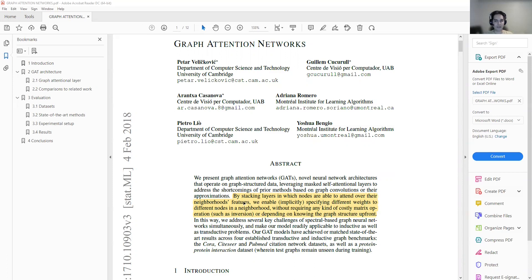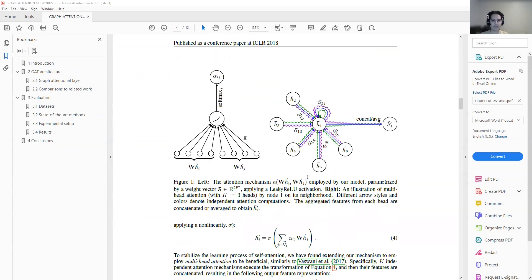By stacking layers in which nodes are able to attend over their neighbors features, we enable specifying different weights to different nodes in a neighborhood without requiring any kind of costly matrix operation or depending on knowing the graph structure up front. If we see this figure, figure one, it can be really helpful. We had another video about convolutional graph neural networks. What is important in a graph is what knowledge can be transferred from neighbor nodes to a specific node.